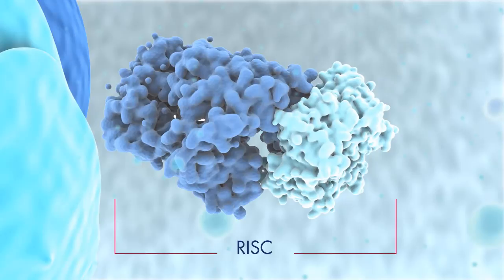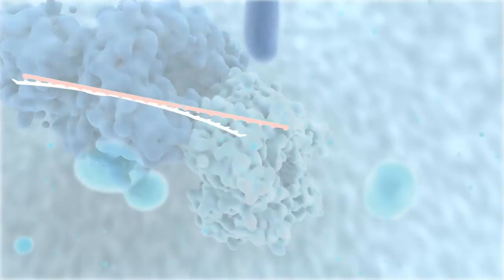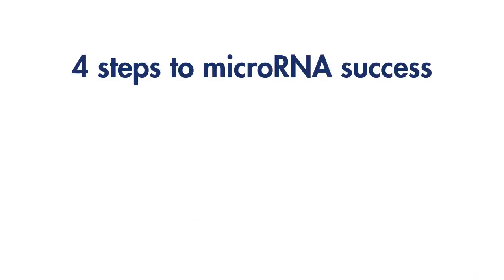This double-stranded RNA associates with the RNA-induced silencing complex, also known as RISC. Once in the complex, the microRNA is unwound and guides RISC to conserved recognition sites in the target messenger RNA. Binding of RISC to the target triggers the silencing effect.